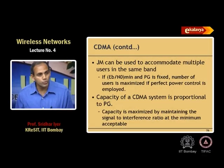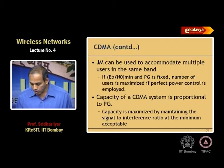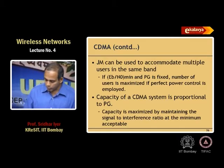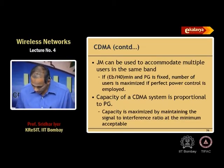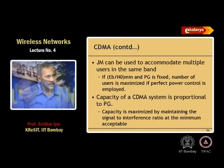If you decrease the Eb/N₀ value further — that is, lower the threshold at which you can receive — the number of users in the system can be higher. The jamming margin can be used to accommodate multiple users in the same band. If Eb/N₀ minimum and the processing gain are fixed, the number of users is maximized by doing perfect power control, maintaining the signal-to-interference ratio at the minimum acceptable level.